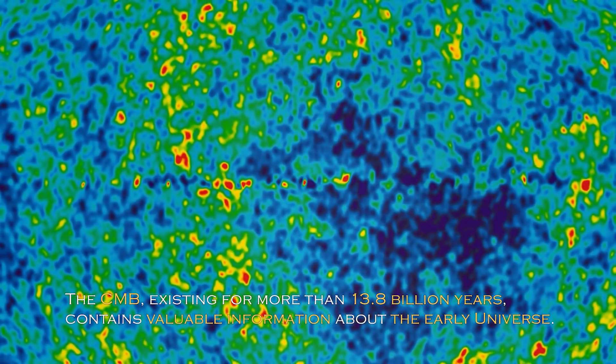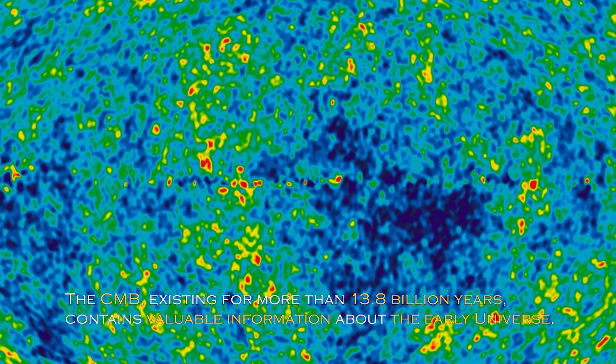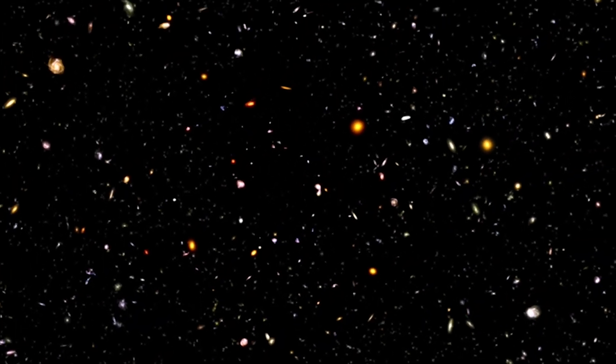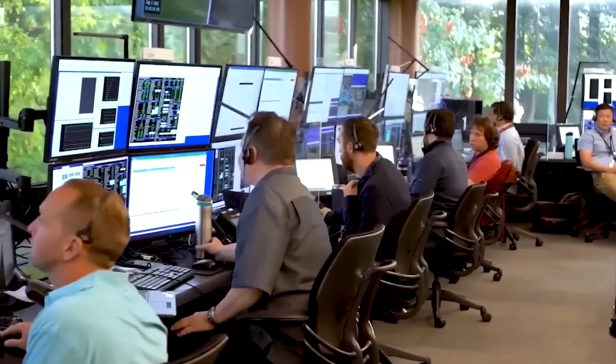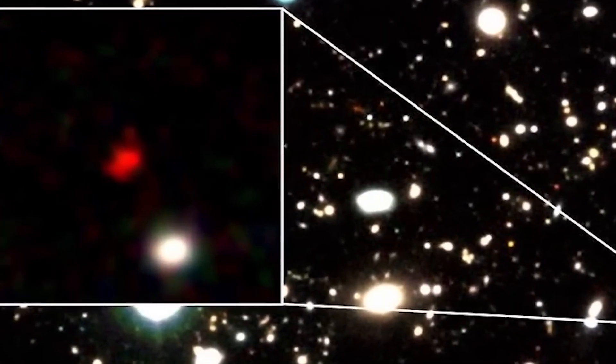The CMB, existing for more than 13.8 billion years, contains valuable information about the early universe. Over the years, theories defining the evolution of the universe have undergone remarkable changes due to new discoveries and advances in research technology. These findings have required adjustments to existing theories and, on occasion, the creation of new theories.